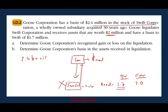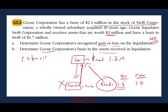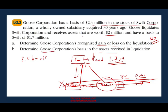Let's look at the questions. First, determine Goose Corporation's recognized gain or loss on the liquidation. Do we have any recognized gain or loss? The answer is no, because this is a parent-subsidiary liquidation — you don't recognize a gain or a loss. We're assuming Swift is solvent and Goose owns 100%, so all requirements are met. Second, determine Goose Corporation's basis in the assets received. When the assets go from Swift to Goose, we report them at carryover basis — that means $1.7 million. The subsidiary is now gone. So: no recognized gain, no recognized loss, and the basis carries from Swift to Goose at carryover basis.